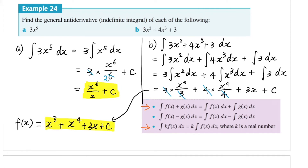We can always check this by going backwards. If we find the derivative of x³ + x⁴ + 3x + c — bring down the power and reduce by 1 for each term — we get 3x² + 4x³ + 3, and the constant term disappears. This matches the function given in the original question, so what we did was correct.